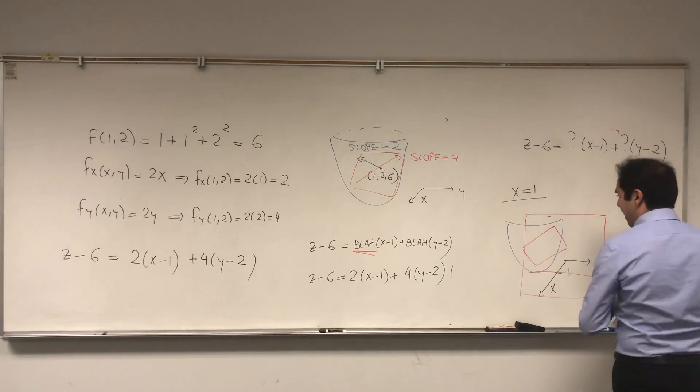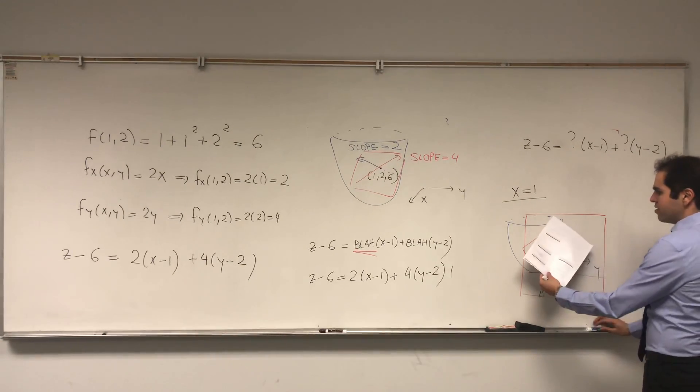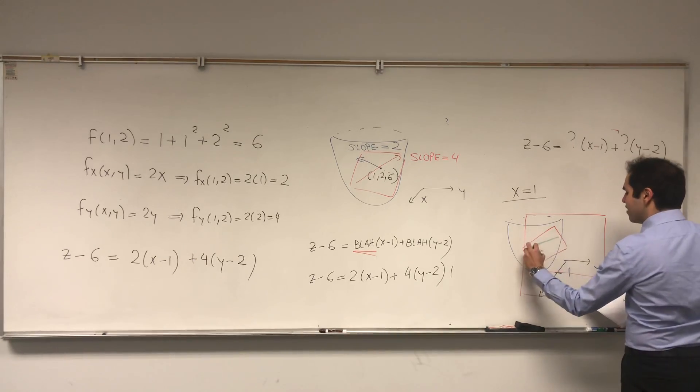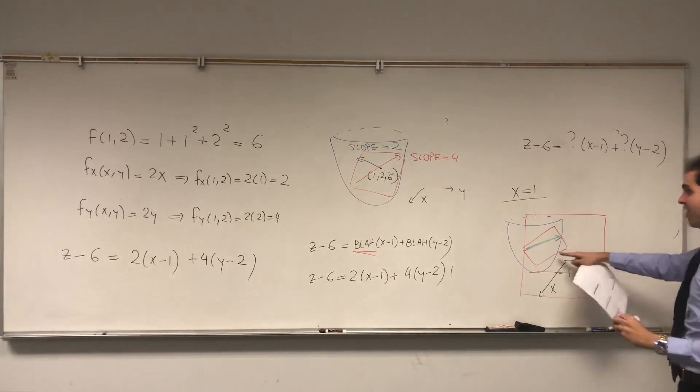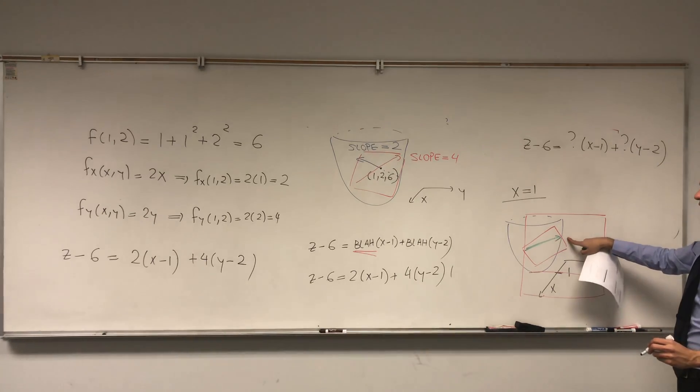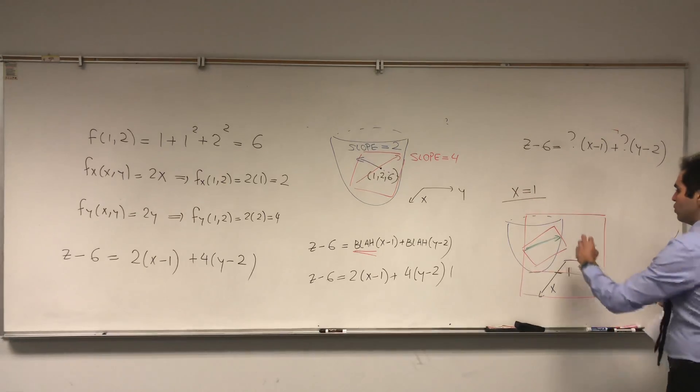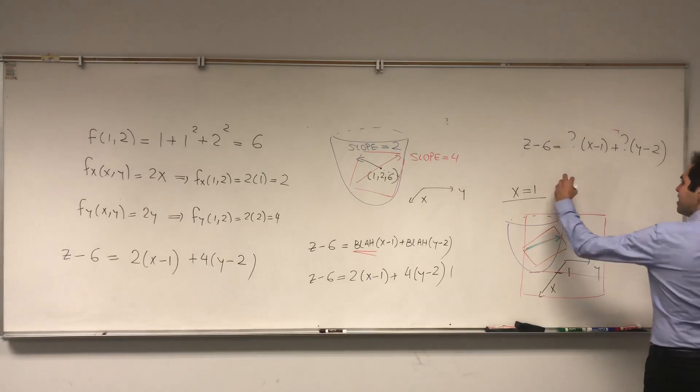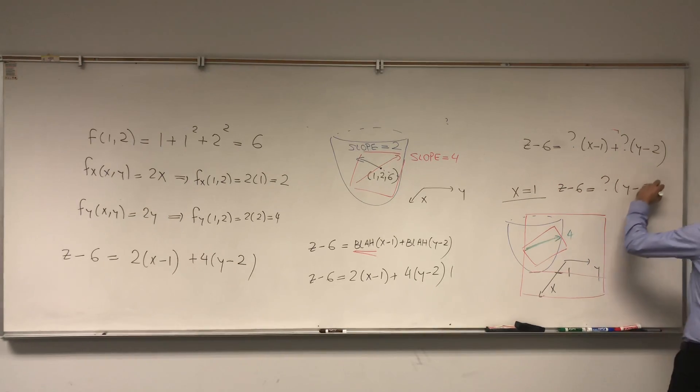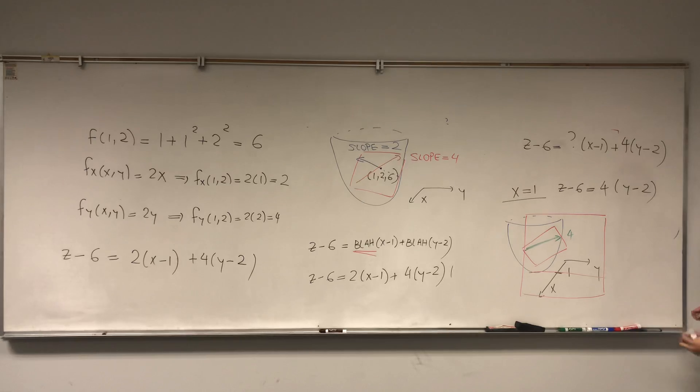So if you take this sheet of paper and you slice it horizontally then what you have left is a line. But this line is precisely in the y direction, so y direction and z direction. And the slope is nothing else than the slope of the line in the y direction, which we define to be fy at (1,2). So the slope is 4, and therefore what we get is if you plug in x = 1 here, we get z - 6 = something(y - 2). But then that something again is precisely the slope of that line which becomes 4. So in other words this thing becomes 4.